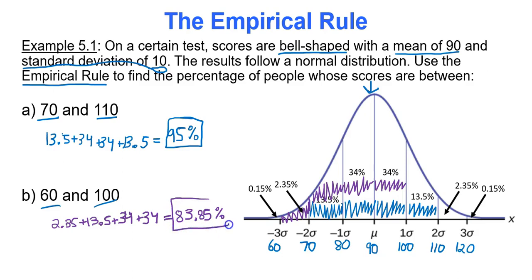So that's the empirical rule. It's used for estimating the percentage or proportion of data values located within a certain number of standard deviations of the mean. That's all I have for now. Thanks for watching.